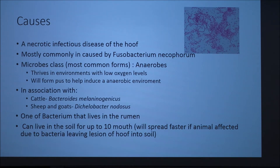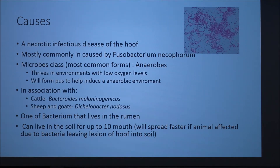There are two different bacterial associations, depending on whether you're talking about cattle or sheep and goats. This bacteria actually lives in the rumen of ruminants and comes out through the feces, where it can live in the soil for up to 10 months. This is how it spreads.